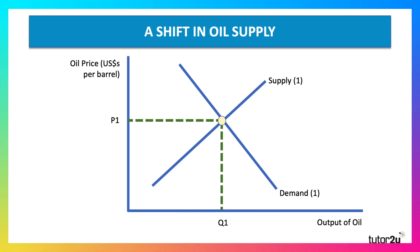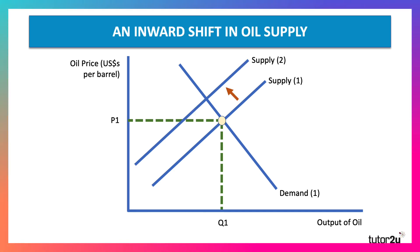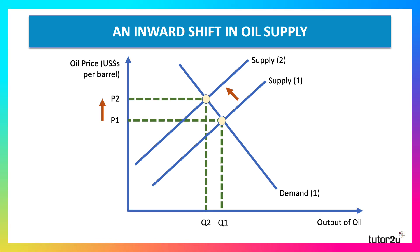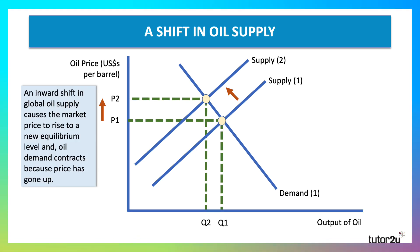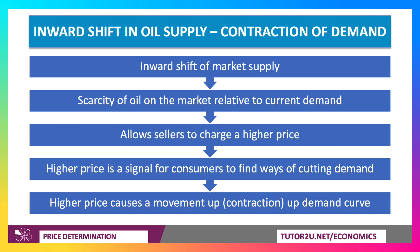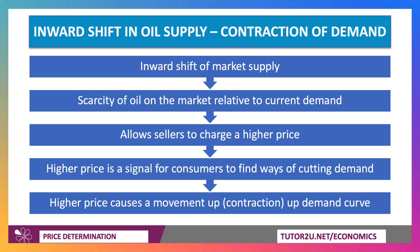The supply of oil can shift as well as the demand for oil. So let's take this example: oil supply falls — there's an inward shift or a decrease in oil supply. Other things being the same, that causes the equilibrium price to go up from P1 to P2, and demand contracts because the price has gone up. Maybe a geopolitical conflict is causing the supply curve to shift to the left, leading to higher oil prices in the market. An inward shift of market supply means there's likely to be greater scarcity of oil relative to current demand, and that allows sellers to charge a higher price per barrel. That is then a signal in the market for consumers to find ways of cutting back their demand, maybe attempt to become more energy efficient, and the higher price causes a contraction up the demand curve.